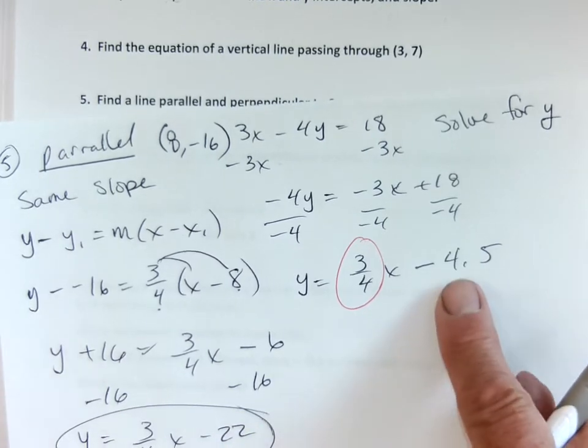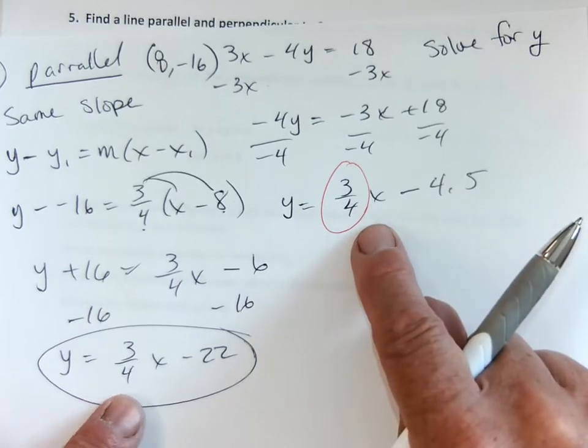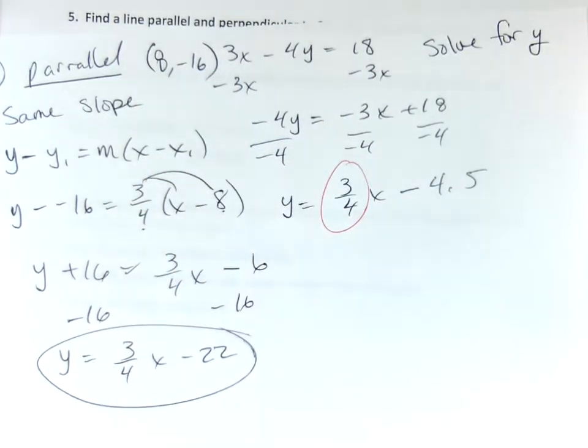And then minus 16, minus 16, I get y equals a 3 fourths x minus 22. Okay? This line is parallel to this line. They're parallel. They are parallel. Same slope. And this line has to go through the point 8, negative 16 because we forced it to. Okay?